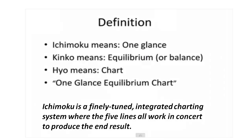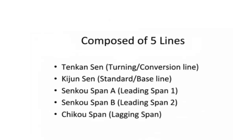Ichimoku means 'one glance,' Kinko means 'equilibrium or balance,' and Hyo means 'chart.' It's composed of five lines: Tenkan-sen, Kijun-sen, Senkou Span A and B, and Chikou. Tenkan-sen is the faster of the two lines. Senkou Span A and B make up the Kumo, or the cloud that you see very distinctively across the screen.